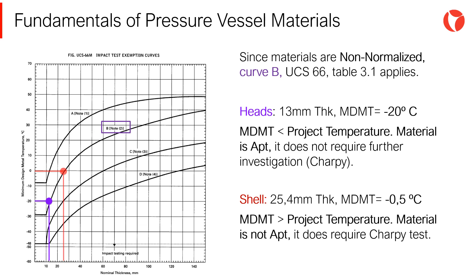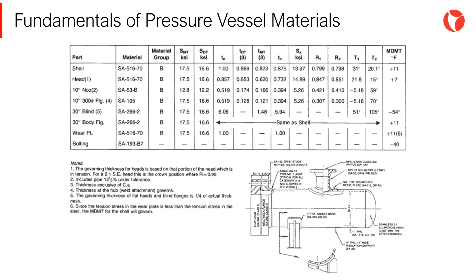For the shell, entering with the shell thickness and crossing the curve, we obtain an MDMT of minus 0.5 degrees Celsius. In this case, the MDMT is higher than the project temperature, so the material is not apt and requires further investigation — in other words, a CHARPY impact test. It should be noted that to determine the MDMT of a pressure vessel, it is necessary to obtain the value of each component, then determine the overall value of the equipment using the most restrictive of all the elements or components.